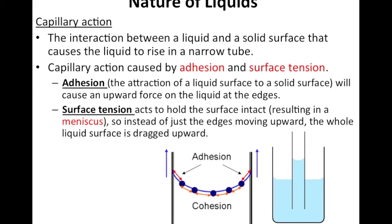So surface tension acts to hold the surface intact, resulting in a meniscus. And if you remember from the beginning of the year, meniscus is this dip that we see in liquids and certain liquids, we don't see a meniscus.